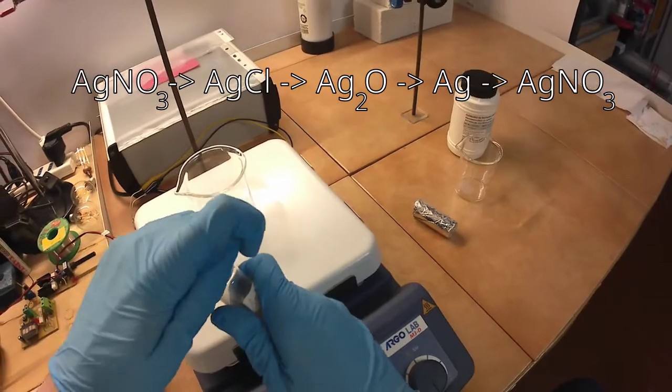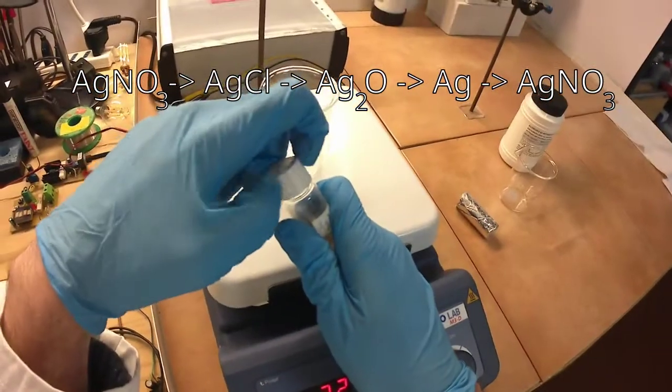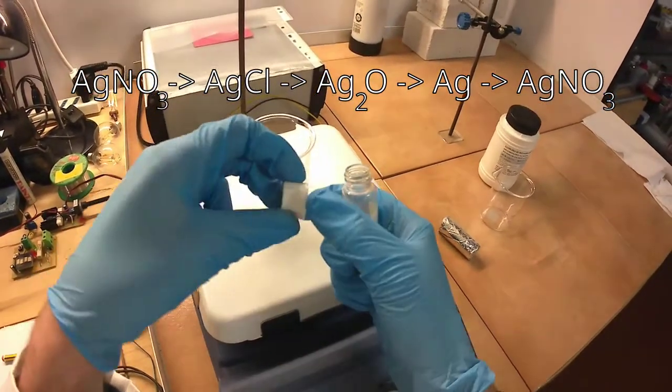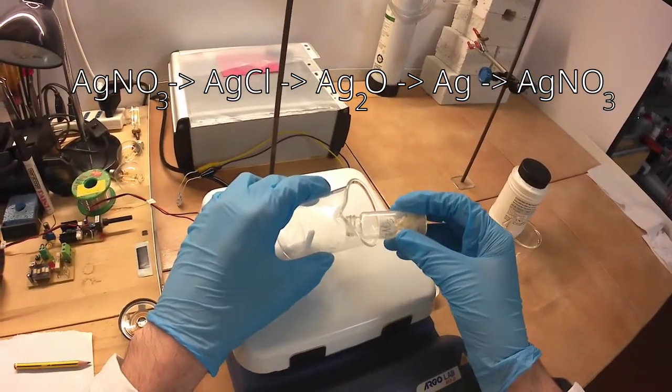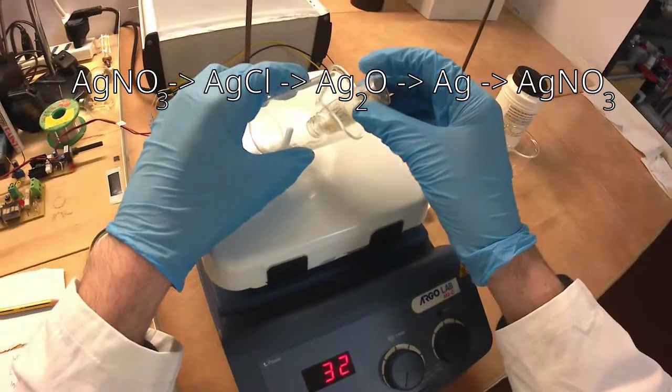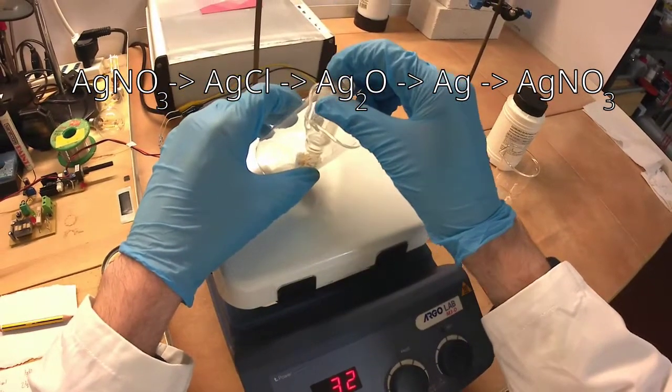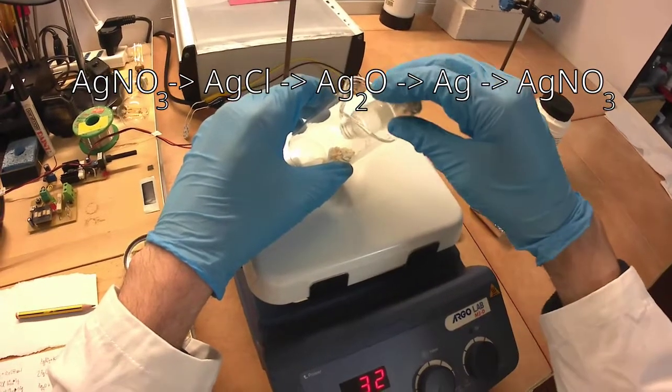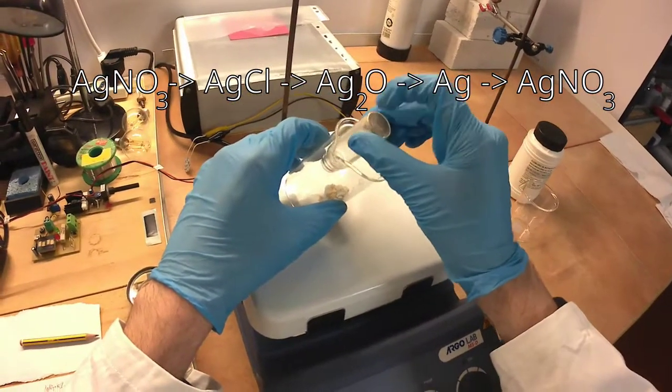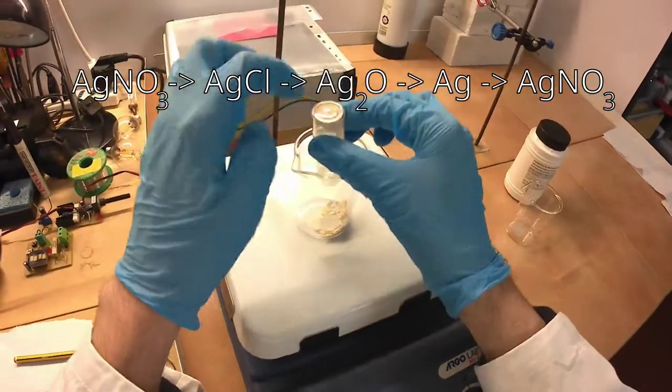There are many reducing agents that will work. Formaldehyde is known to work, some reducing sugars are known to work as well. However, I happen to have some vitamin C lying around, which should behave as a reducing agent. So instead of following the known path, today we'll formulate a little research question: Can ascorbic acid reduce silver oxide to silver metal? And try this hypothesis with an experiment.